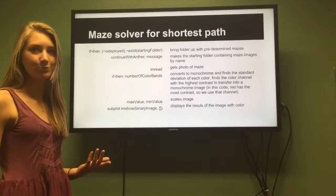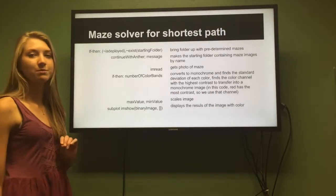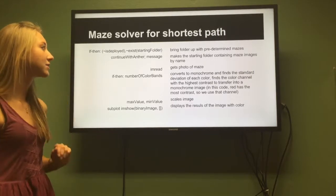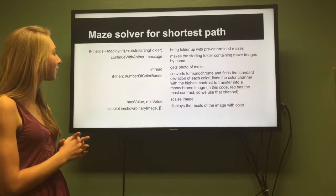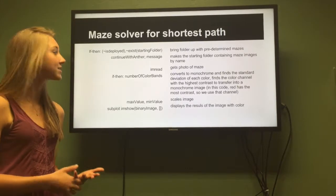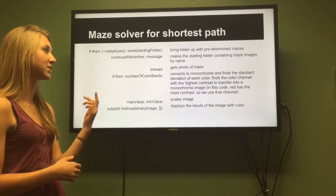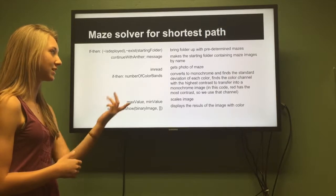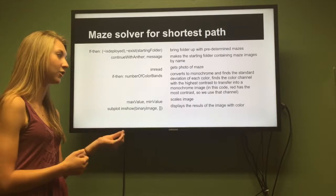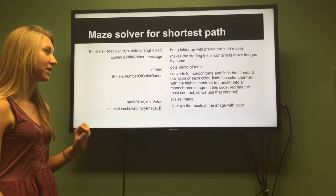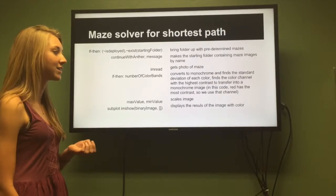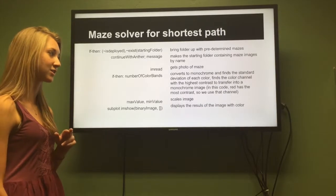Me and Lucrezia ended up doing our part together since our code is so long. We did a maze solver for the shortest path. We have our first if-then statement — we bring up the folder containing predetermined maze images. We have a message that says continue with the number, making the starting folder containing the maze images by name and getting the photo of the maze. Then another if-then statement converts any color in the maze to monochrome and finds the standard deviation of each color channel. It finds the color channel with the highest contrast — in our code, red is the channel with the highest contrast, so we use that channel.